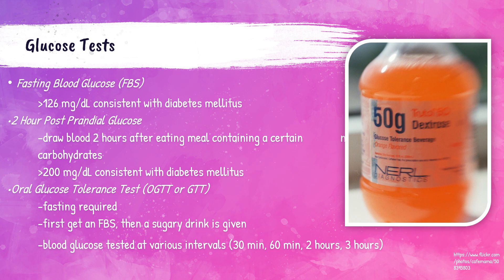The most commonly preferred screening test for glucose is the fasting blood glucose (FBS) or fasting plasma glucose (FPG) test. The patient fasts for a certain number of hours and then has their blood glucose measured. A normal FBS or FPG result is below 100 milligrams per deciliter. A result of 126 milligrams per deciliter or higher is consistent with a diagnosis of diabetes mellitus.